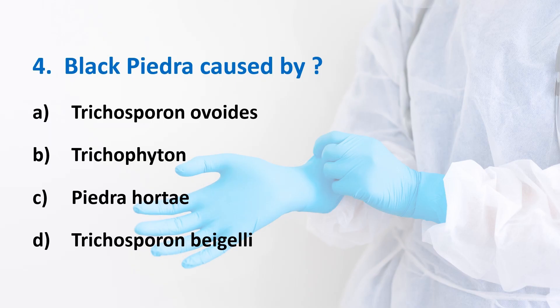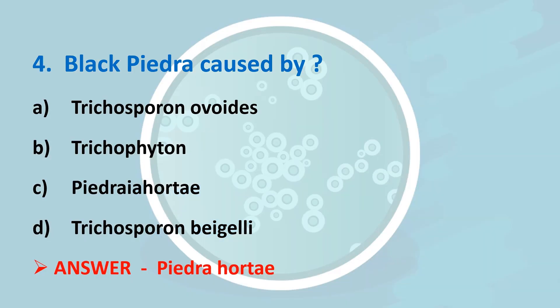Fourth question: Black Piedra is caused by? Options: Trichosporon avoides, Trichophyton, Piedra hortae, Trichosporon beigelii. Answer is Option C, Piedra hortae. It causes Black Piedra, which contains arthrospores. It is a phaeoid fungus that produces reddish-brown colonies.